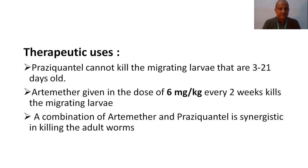Praziquantel cannot kill the migrating larvae that are 3 to 21 days old. It can be given in combination with artemisin to kill the migrating larvae. The dose of artemisin is 6 mg per kg every two weeks. This combination of artemisin with praziquantel has a synergistic efficacy in killing adult worms. For other fluke infestations, praziquantel is highly effective against lung flukes and intestinal flukes, and the recommended dose is 25 mg per kg divided into three doses in one day.